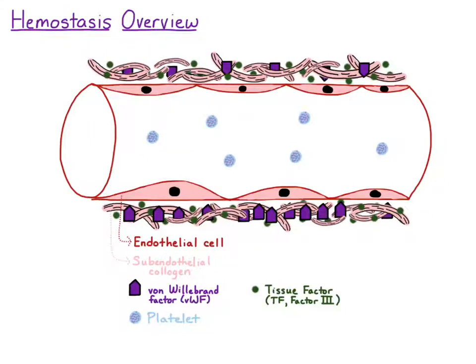This video is going to be on an overview of hemostasis, and hemostasis is the stoppage of blood flow. I already have pictured here a blood vessel, which contains six platelets, and below the endothelial cells is subendothelial collagen, which contains two proteins: von Willebrand factor represented in purple, and tissue factor represented as green.